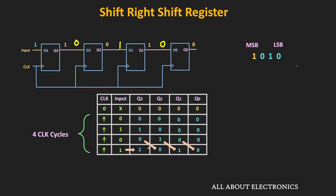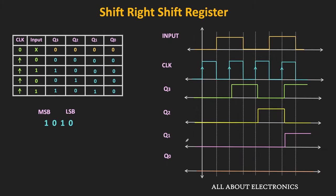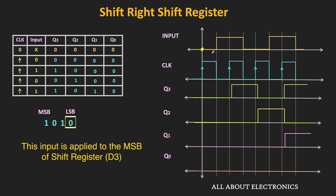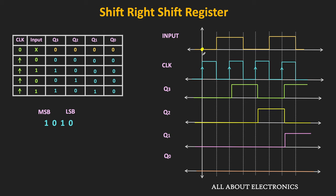Looking at the timing diagram, at the first clock pulse the input to the flip-flop is 0, applied to the MSB, so the output Q3 will remain 0. At the next clock pulse, the input to d3 is 1, so its output will become 1. The flip-flop will take certain time to respond to the present input — that means Q3 will change only after the propagation delay of the flip-flop.